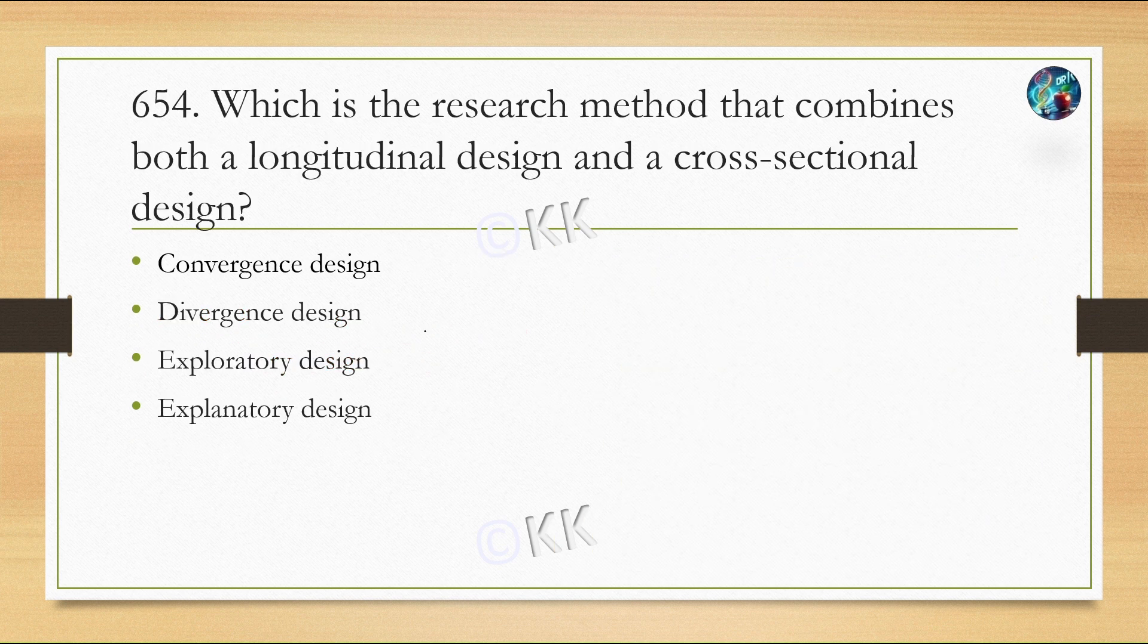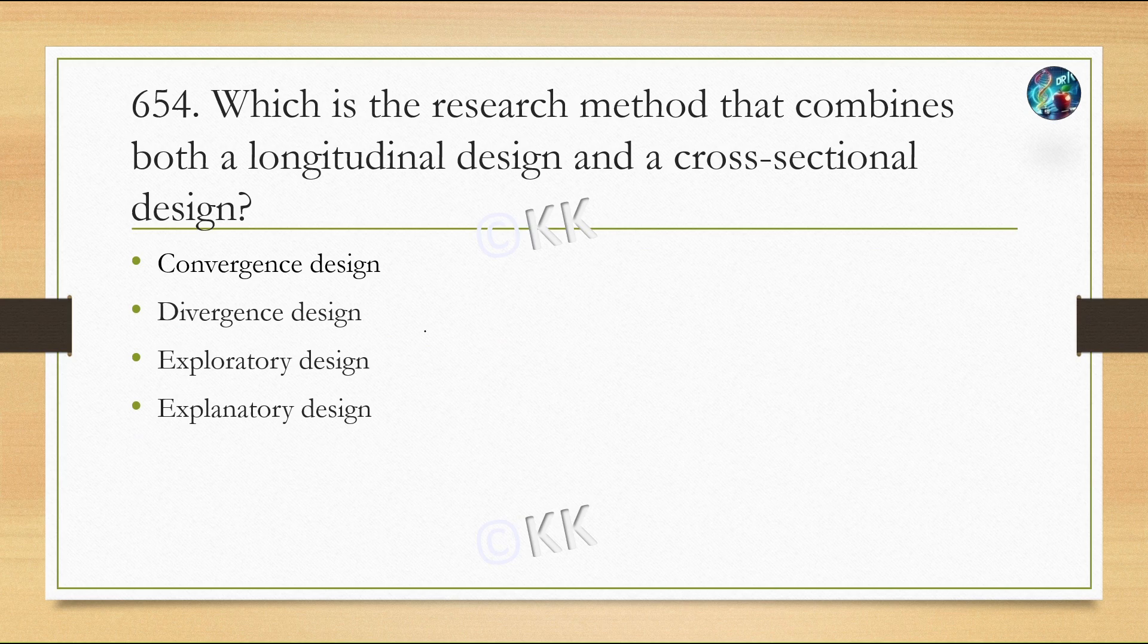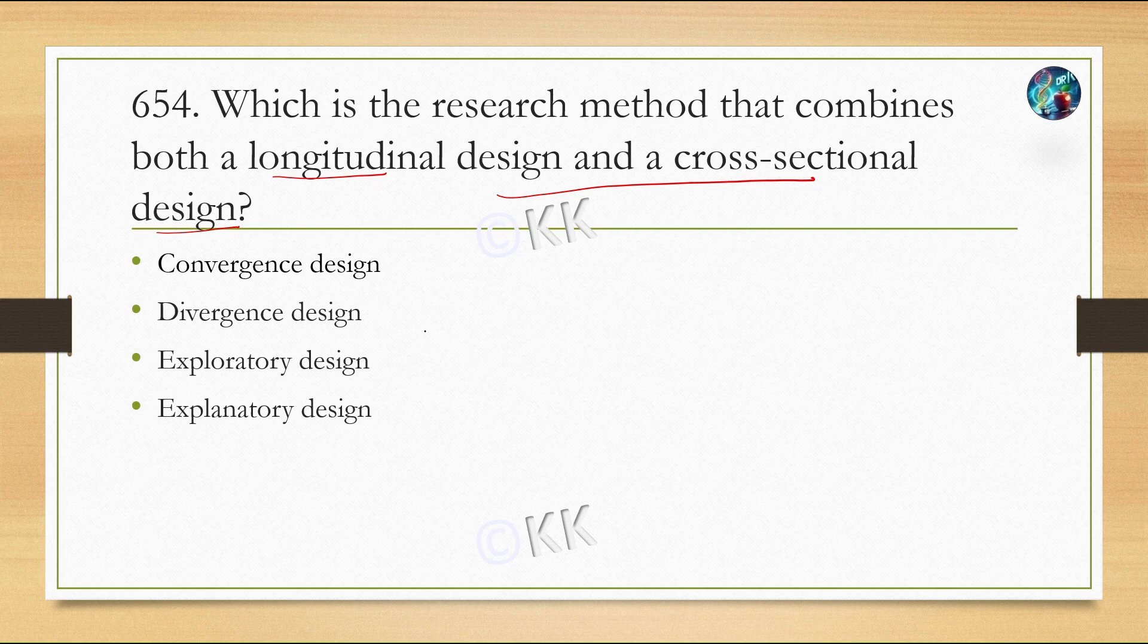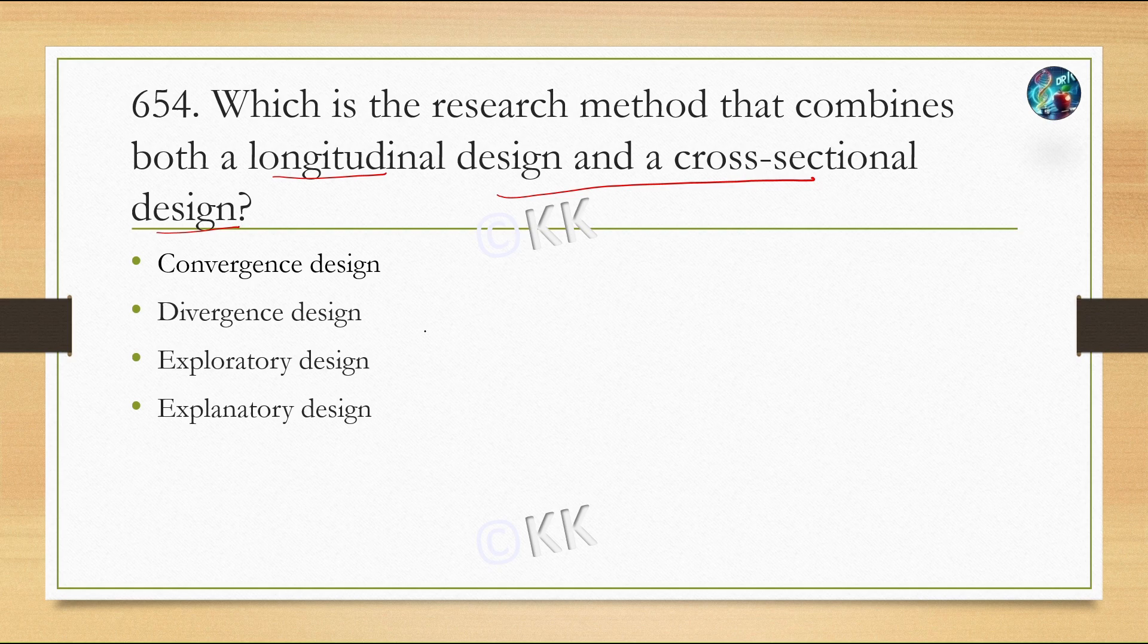Next question: Which research method combines both longitudinal design and cross-sectional design? Option A: convergence design, Option B: divergence design, Option C: exploratory design, Option D: explanatory design. The correct option is Option A, convergence design. Now you can see the flowchart.